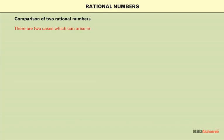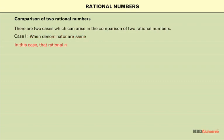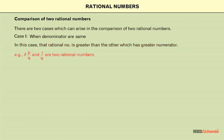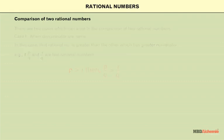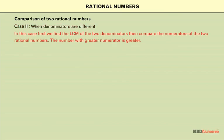There are two cases which can arise in the comparison of two rational numbers. Case 1: when the denominators are the same. In this case, the rational number with the greater numerator is greater. For example, if p upon q and r upon q are two rational numbers and p is greater than r, then p upon q is greater than r upon q.